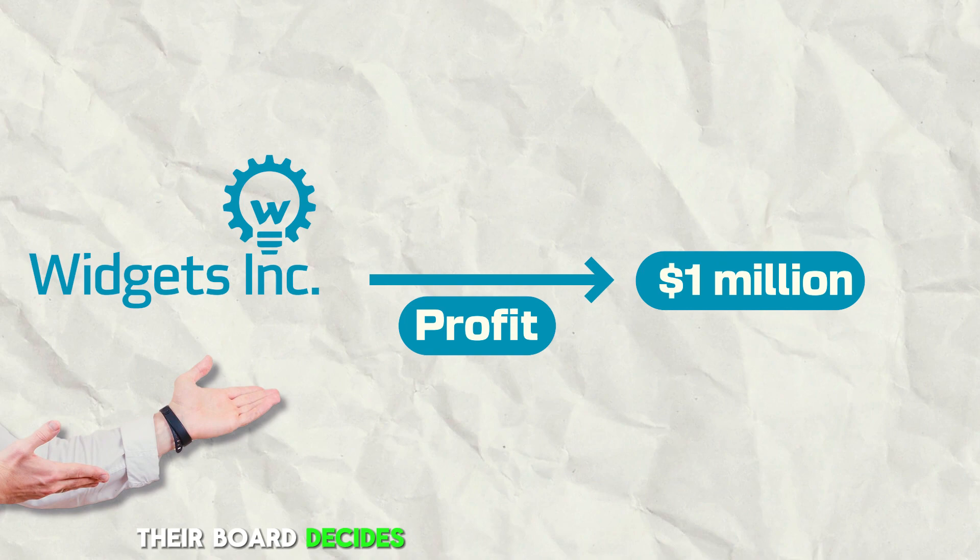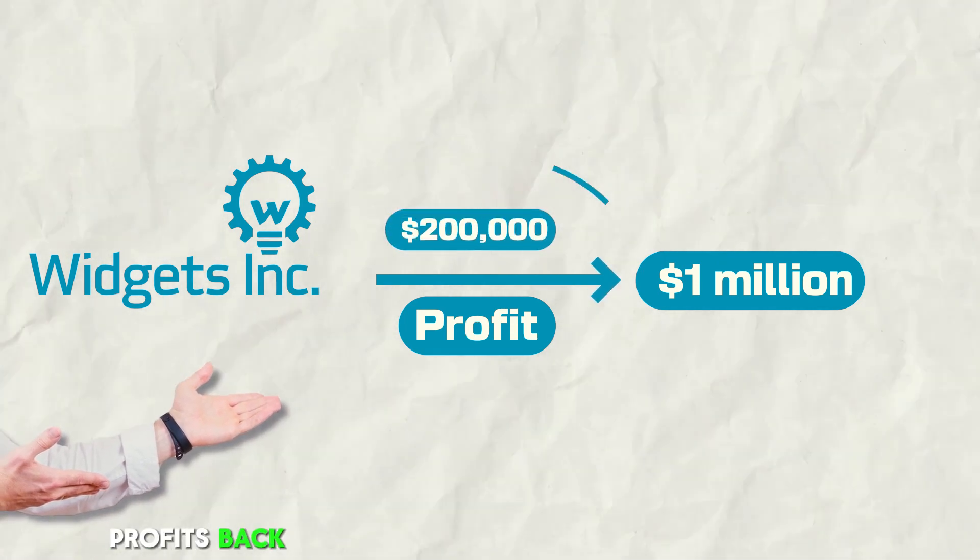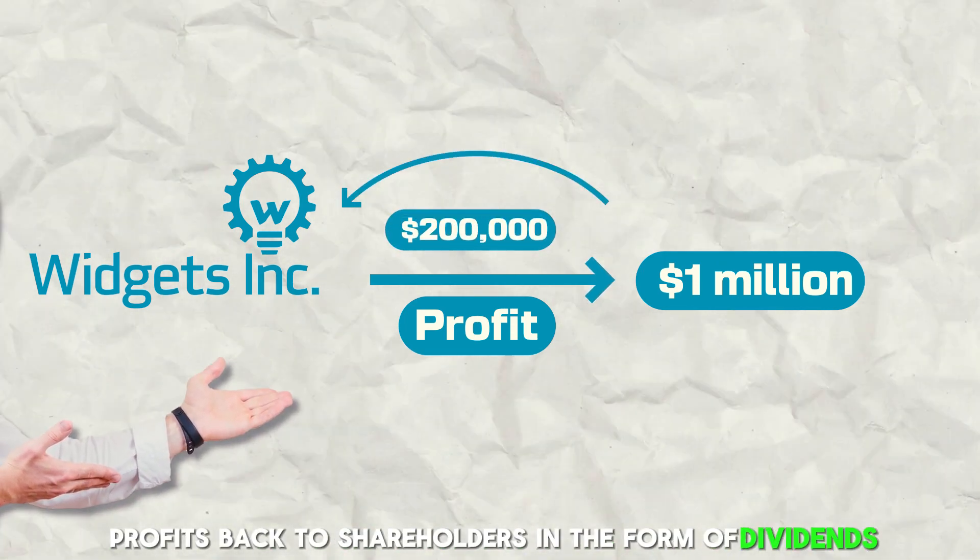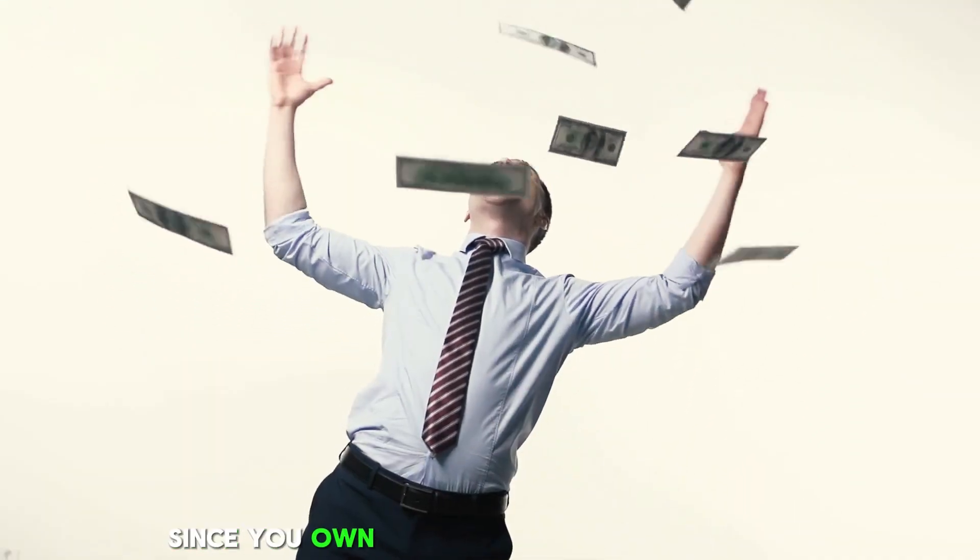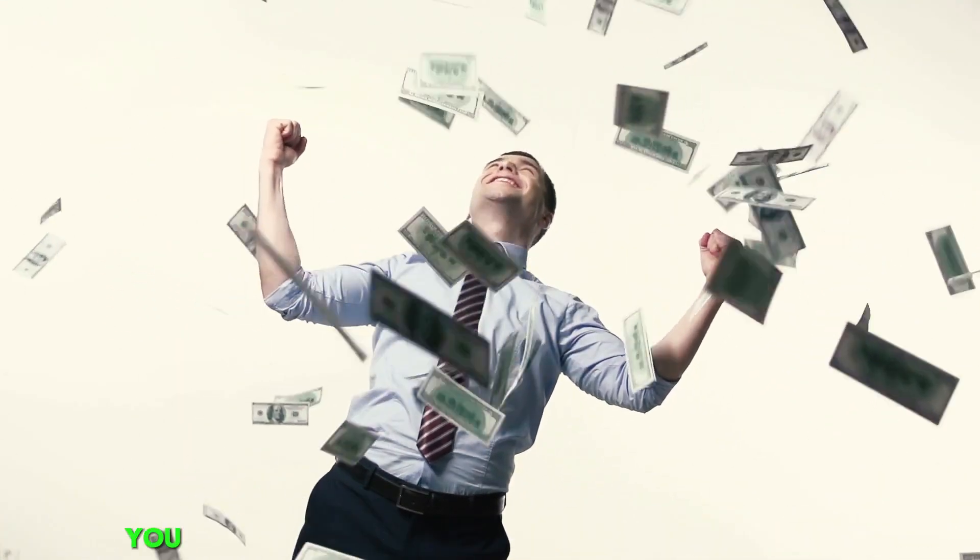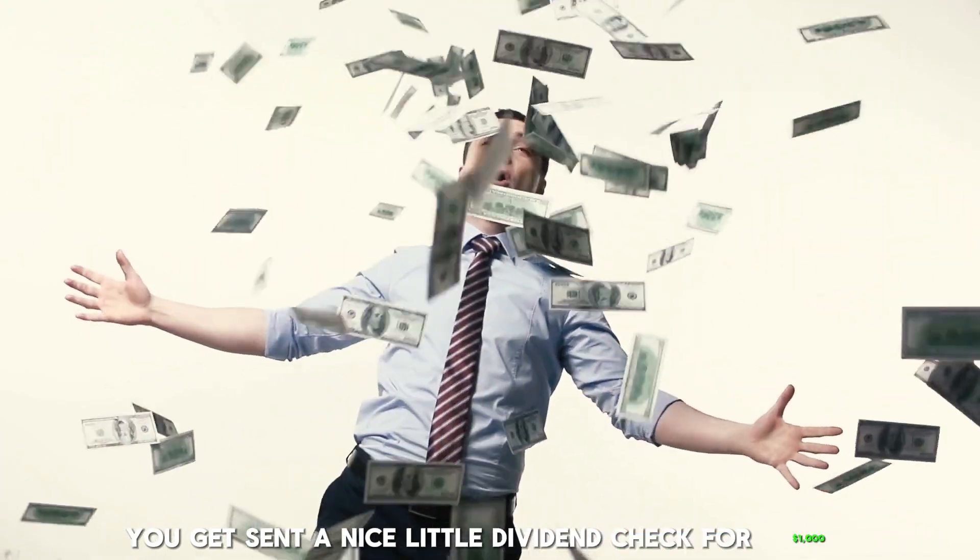Their board decides to pay out $200,000 of those profits back to shareholders in the form of dividends. Since you own 0.5% of the company's shares, you'd get sent a nice little dividend check for $1,000.